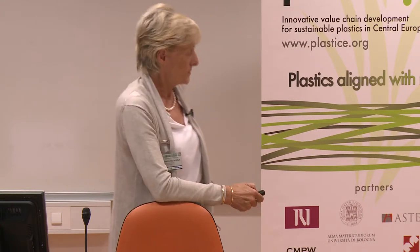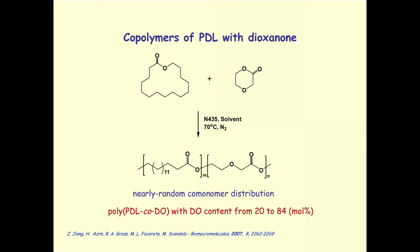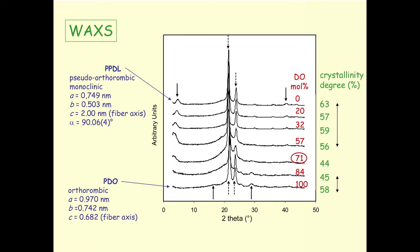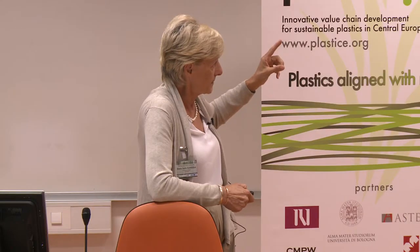Other co-polymers use the pentadecalactone unit with dioxanone. Copolymers with dioxanone were produced over the whole composition range — from 20 to 84 mol% dioxanone — with a co-unit distribution very close to random. In this case the behavior is different from the isomorphic systems, because the X-ray diffraction patterns of the two homopolymers show reflections that don't fall in the same positions — the unit cells are quite different.